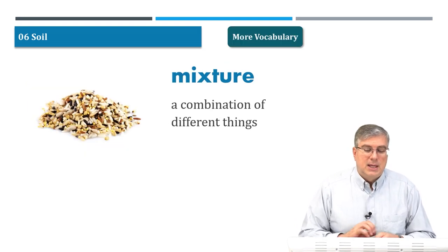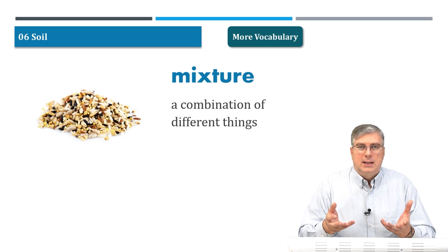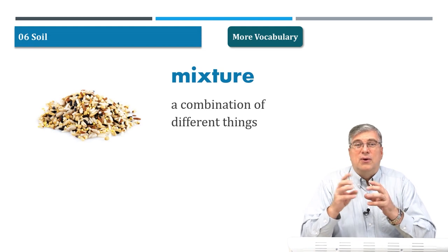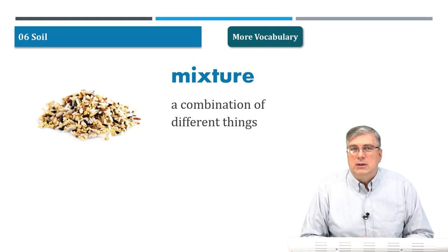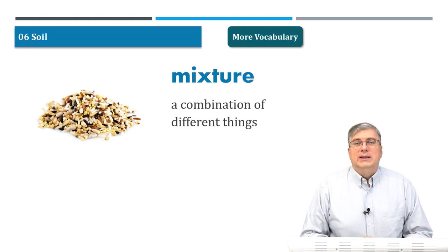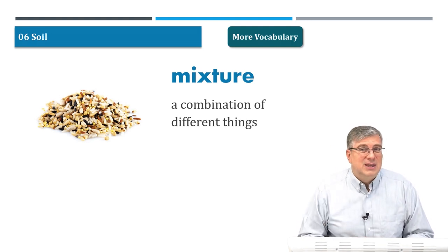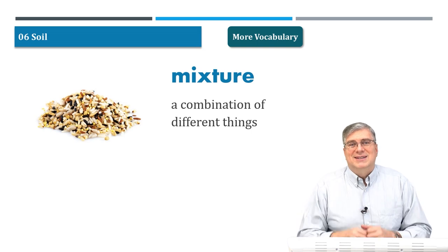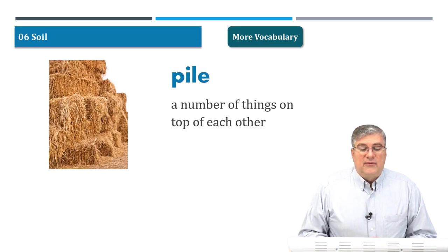Next word: mixture. Remember sand, rice, sugar, wheat? If you mix all those little grains together, you have a mixture. Granola is a good example — it's a mixture of different grains: you might have wheat, rice, nuts, and berries, all mixed together. It's a combination of different things. Delicious for breakfast!